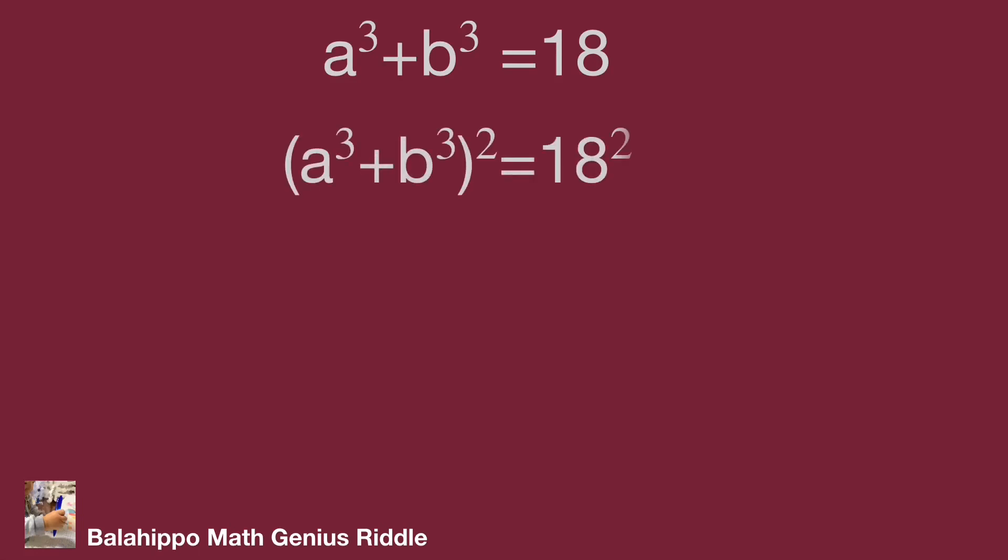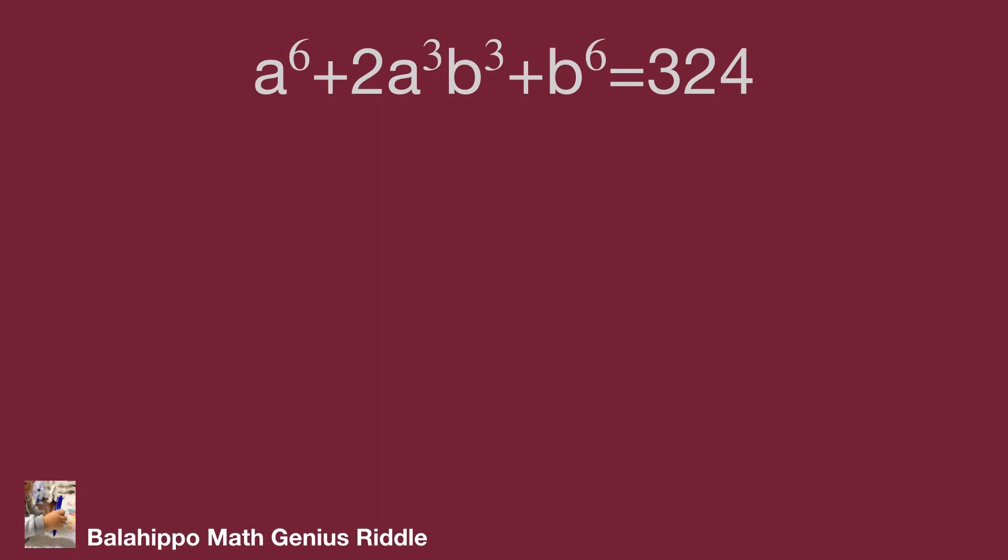We make quantity a cubed plus b cubed squared equal to 18 squared. Expand that as a power of 6 plus 2 times a cubed b cubed plus b power of 6 equal to 324. So a power of 6 plus b power of 6 equal to 324 minus 2 times a cubed b cubed.